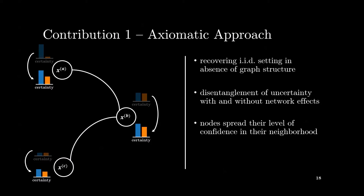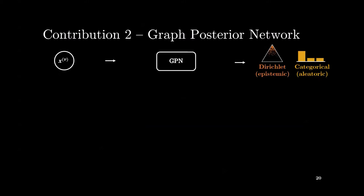This update of uncertainty estimates is based on the idea of nodes spreading their level of confidence, meaning that confident nodes should make neighboring nodes more confident. Following those axiomatic considerations, we propose graph posterior network as a second contribution. Instead of directly predicting the categorical target distribution, GPN predicts the parameters of the Dirichlet distribution, which represents the reducible epistemic uncertainty, also referred to as model uncertainty. The categorical target obtained from the Dirichlet distribution then indicates the inherent aleatoric uncertainty, also referred to as data uncertainty.